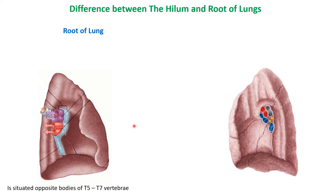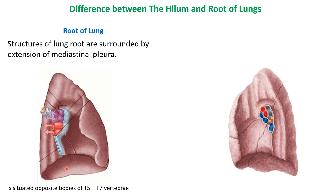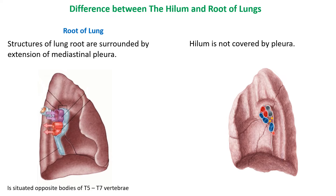Regarding relation to the pleura: the structures of the lung root are surrounded by an extension of the mediastinal pleura, which is part of the parietal pleura. At the margins of the hilum of lung, the mediastinal pleura becomes continuous with the visceral pleura, which is tightly adherent to the lung. In case of the hilum itself, it is not covered by any pleura. At its margins you can see the attachment of the mediastinal layer of pleura, which extends downwards as the pulmonary ligament.